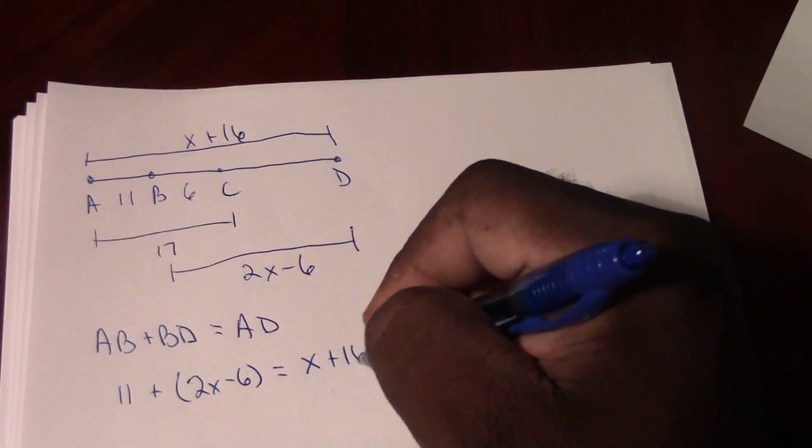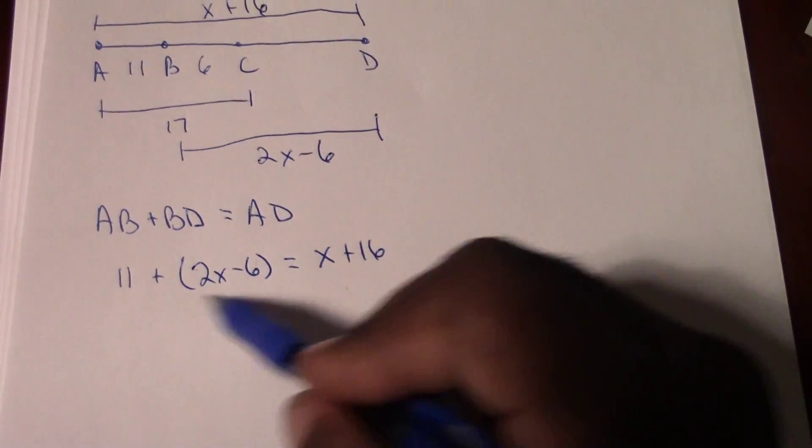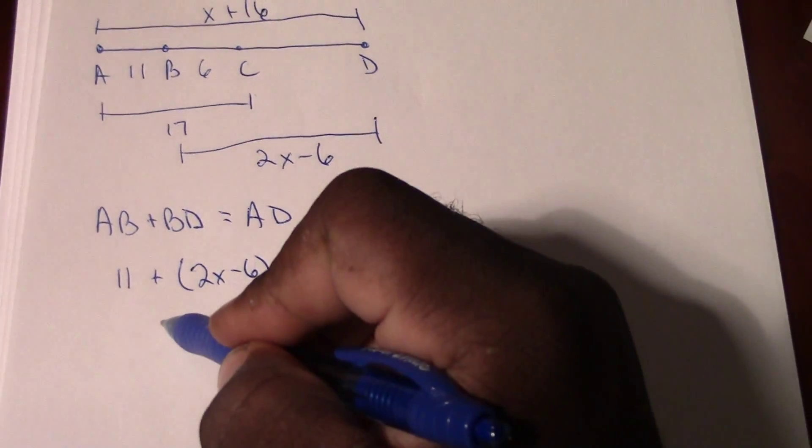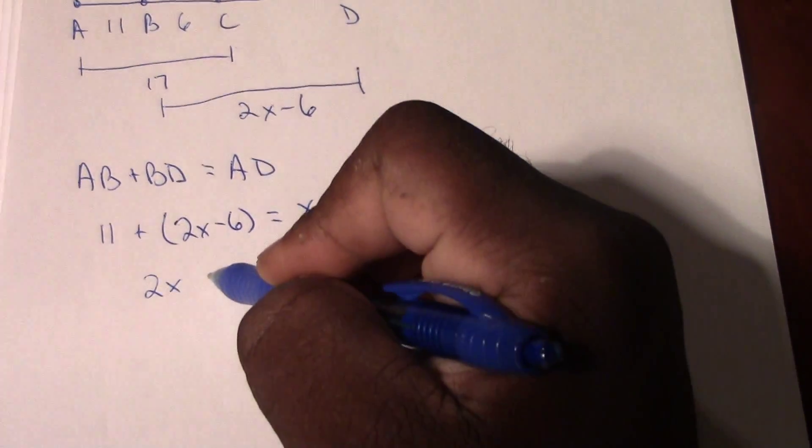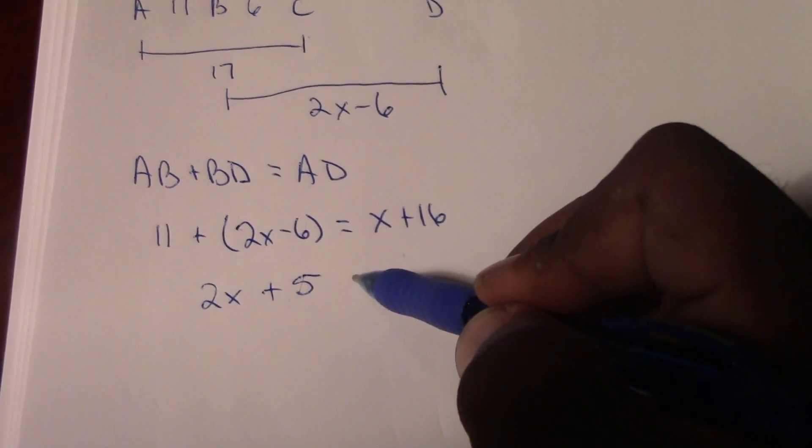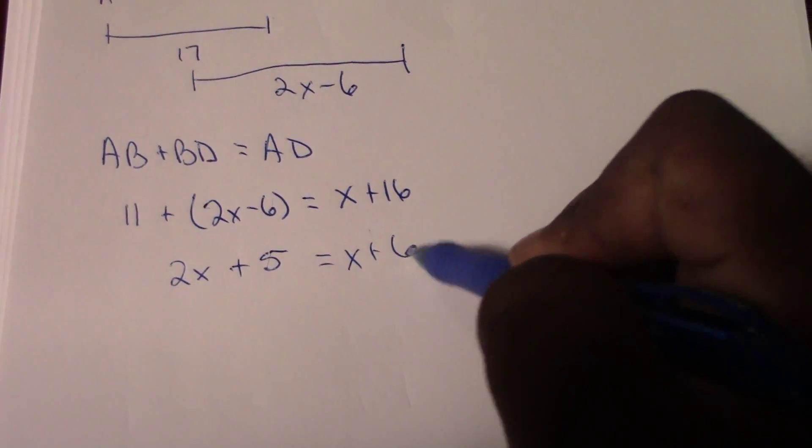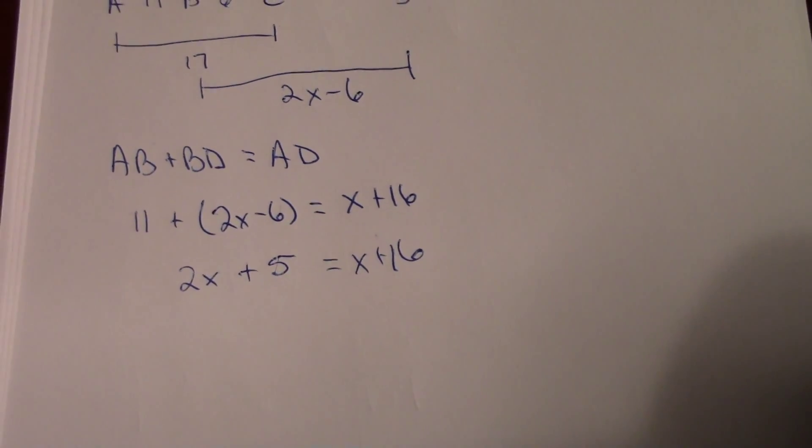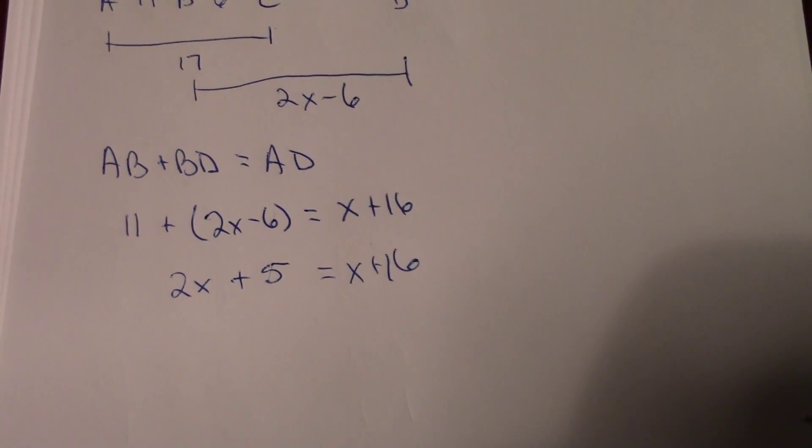From here we're going to combine our like terms. We end up with 2X plus 5, and that's going to equal X plus 16. So now we have a simple multi-step equation.